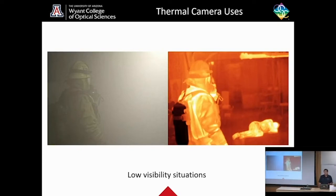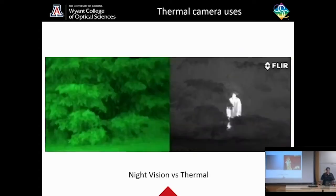Modern day uses include uses by firemen in low visibility situations. So on the left, you have an image of what the eye could see. There's a lot of smoke. You can't really see through it. On the right, you have the same scene seen through a thermal camera. This camera can see through the smoke because the smoke is not super hot or super cold. And you can see the human lying here on the floor that you might not be able to see with just the human eye.